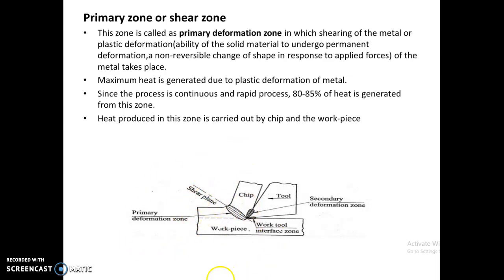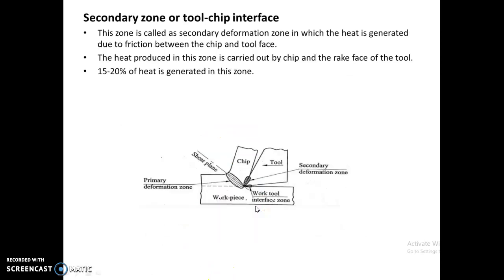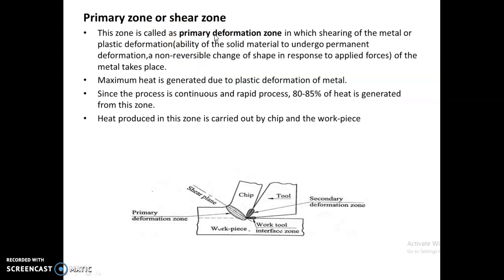The next zone is the secondary zone, also called the tool-chip interface. It is worth noting that a large amount of heat is generated in the primary zone — around 80 to 85 percent of the total heat is generated from this zone.